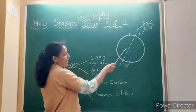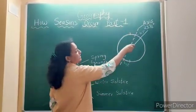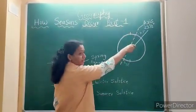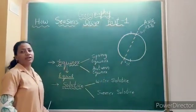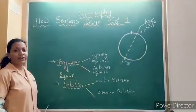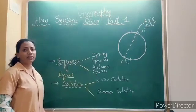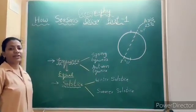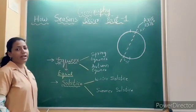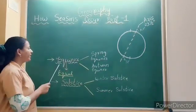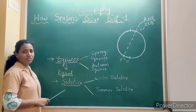As we know, the axis of the earth is tilted at 23 and a half degrees. Due to this, sun rays fall on different places during different seasons. This leads to variation in the duration of daytime and nighttime. For this, we need to understand the concept of equinox and solstice.